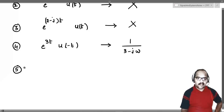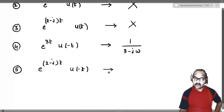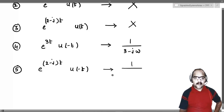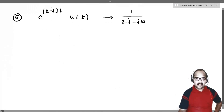Similarly, the fifth example is e power 2 minus jt multiplied with u of minus t. This is also absolutely integrable and hence you will get 1 by a minus j omega, which is 1 by 2 minus j minus j omega, as the Fourier transform of the signal.